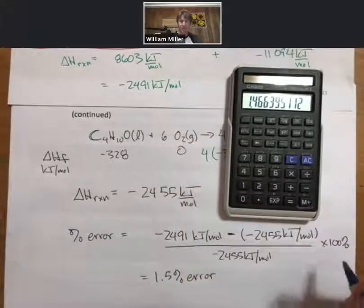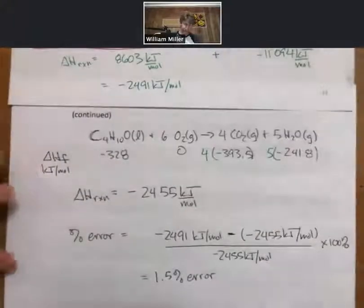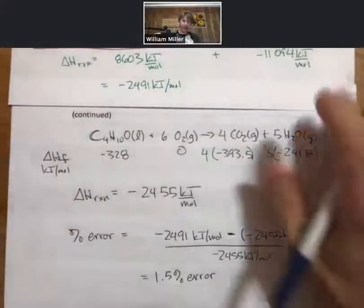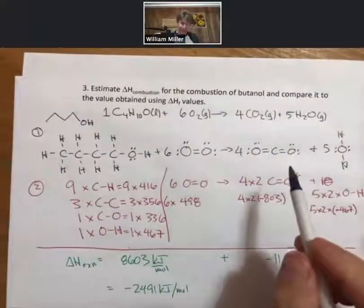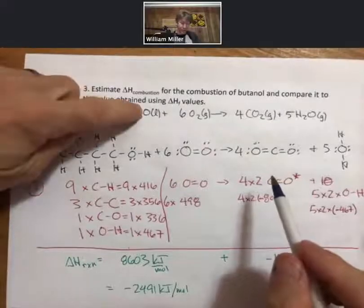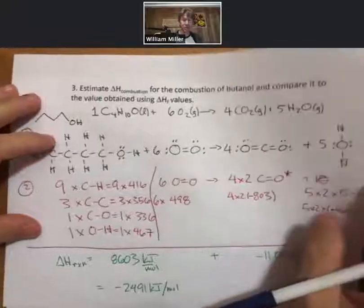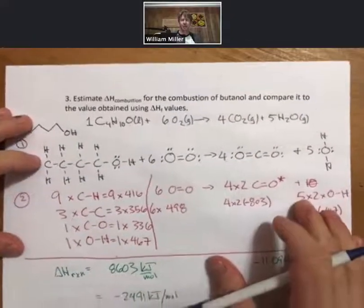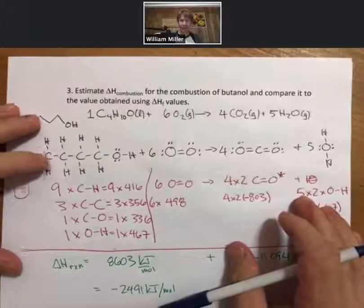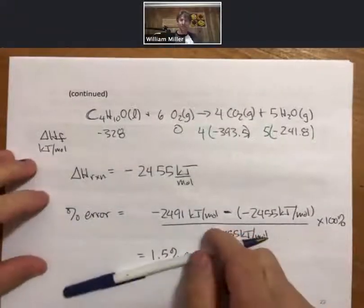Which is pretty darn good considering that we knew nothing about the molecule other than what kind of bonds it had, and one of the starting points was a liquid. This is a completely general and powerful procedure for estimating ΔH of reactions, specifically for gas phase materials, however it can be applied to other situations as well.